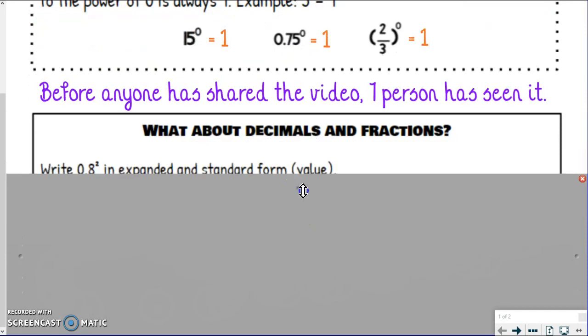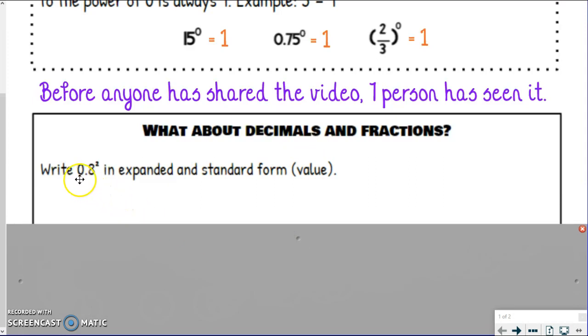So let's move on to what about decimals and fractions. Let's talk about this first one. So we've got write zero point eight or eight tenths squared in expanded form and standard form. Remember, that's also called finding the value. So when I do that, I got my base, zero point eight. So I'm going to write that, and I'm going to write it twice because that's the exponent. So here is expanded form, 0.8 × 0.8. And then to find the standard form with decimals, here's what I like to do. I know eight times eight is sixty-four, but I also know that I have two numbers behind my decimal in total, one from the first factor, one from the second. So I have two numbers behind the decimal in total, so that means I need two numbers behind the decimal in my answer, so I get sixty-four hundredths, or zero point six four.